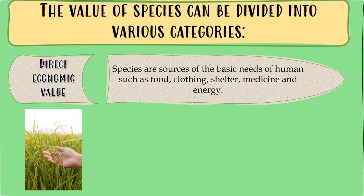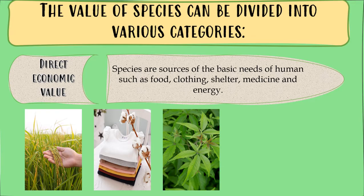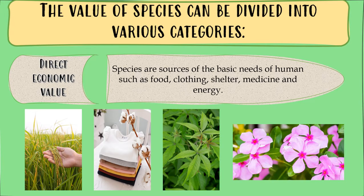For example, rice plant — this is the staple food of Filipinos. Next is cotton, which is made into clothing. The third one is lagundi, which is used as medicine for cough. And finally, rosy periwinkle, called chichirica in Tagalog. According to studies, it is called a life-saving plant. Rosy periwinkle is a valuable medicine, but it is also extremely poisonous.